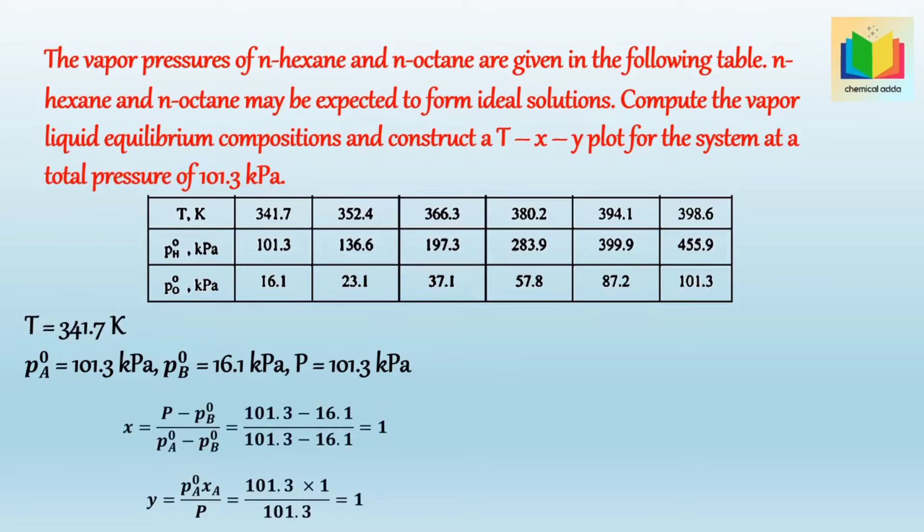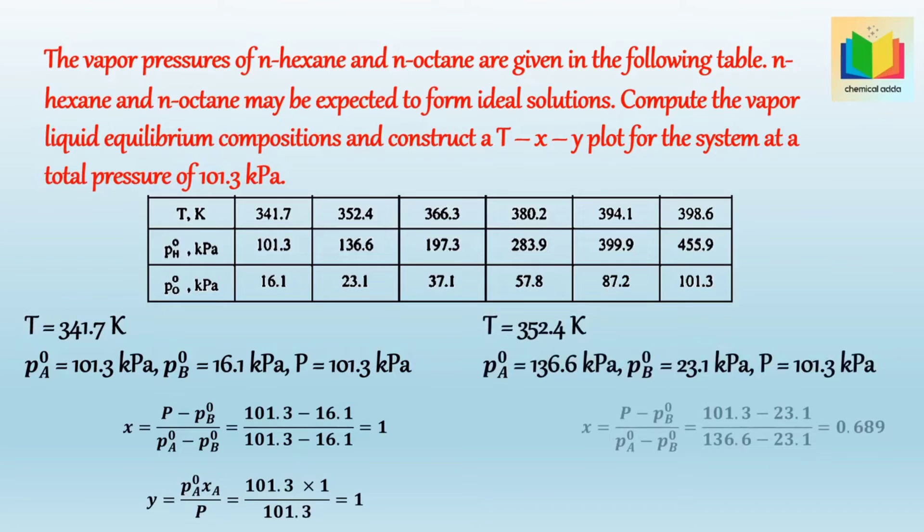Similarly, let's find X and Y for T is equal to 352.4 Kelvin. At T is equal to 352.4 Kelvin, PA0 is equal to 136.6 kilopascal, PB0 is equal to 23.1 kilopascal. So after putting the values and solving it we get X is equal to 0.689. Similarly the value of Y calculated as Y is equal to 0.93.